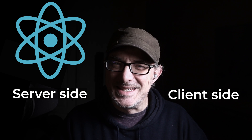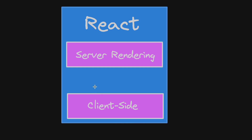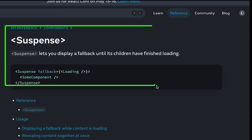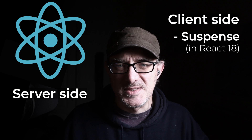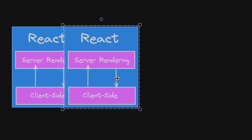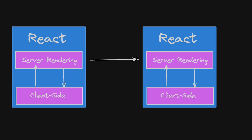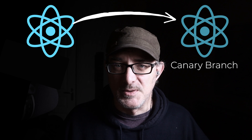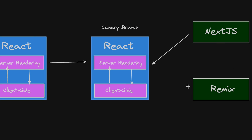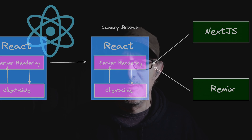They restructured the library to be able to work naturally on the server. The client side of the library needed to integrate the asynchronous aspect of client-server communications, which is why we got the Suspense component — which is kind of a UI version of async/await. At the same time, the React team set up the canary branch, intended for developing frameworks. The features in the canary branch aren't exposed directly to developers.